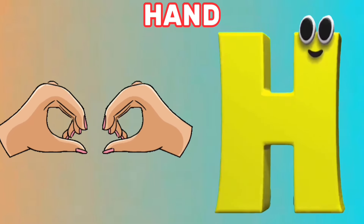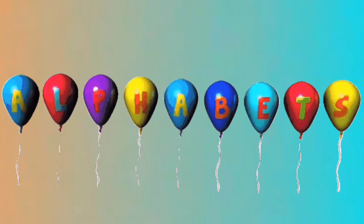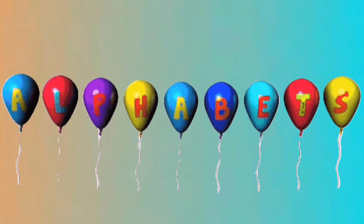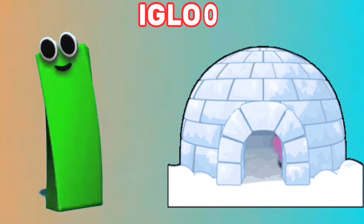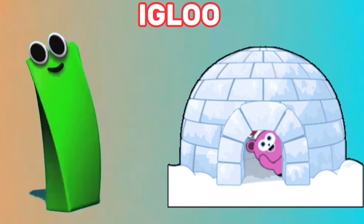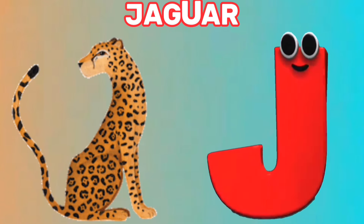H is for Hand. H, H. It's the letters of the alphabet. I is for Igloo. I, I. Igloo.